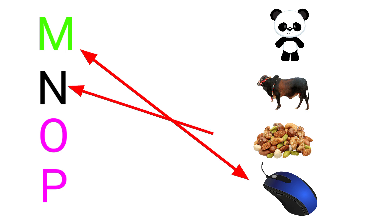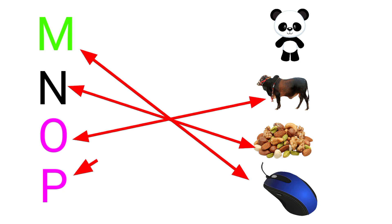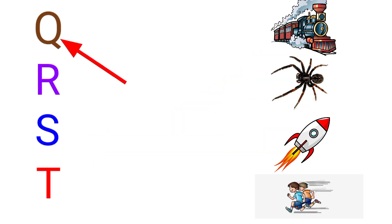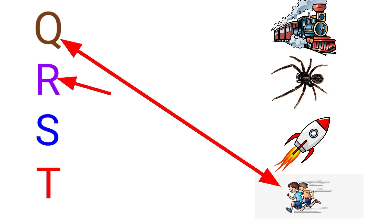N for Nut, O for Ox, P for Panda, Q for Quick.